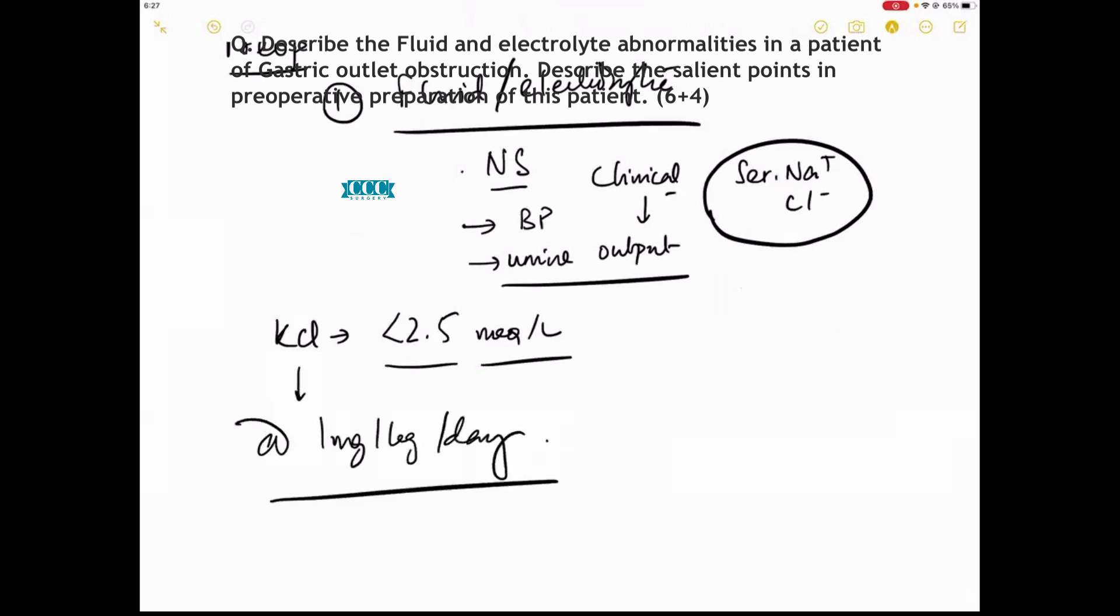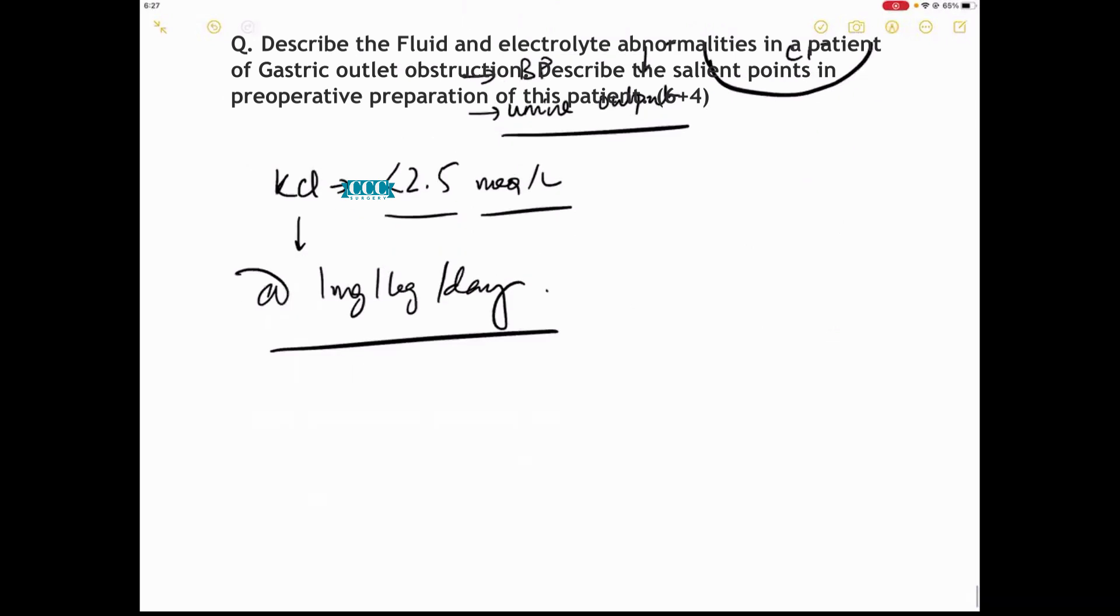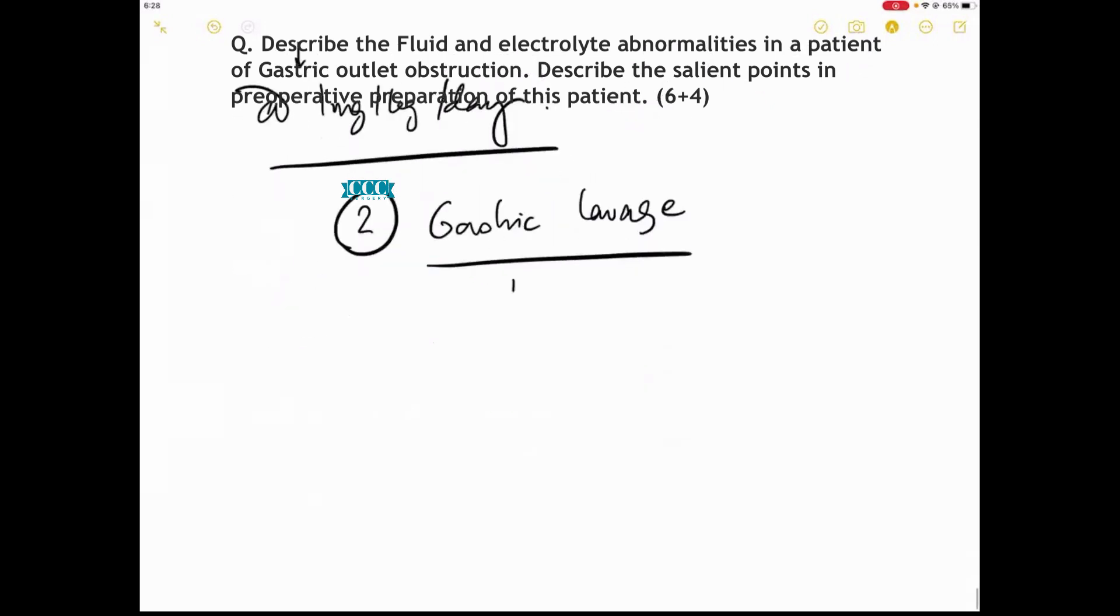The second point in pre-operative preparation is gastric lavage. Gastric lavage is done with normal saline at room temperature, not cold. The wash is given with a Ryles tube inserted till the effluent becomes clear.